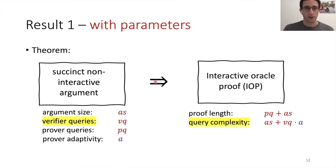So now going back to our results, if you start with a SNARG with argument size AS, VQ verifier queries, PQ prover queries, and adaptivity A, you end up with the following IOP. So the proof length is PQ plus AS. So AS is the argument size. So of course we're gonna have the argument here, but you cannot expect to have only this because the argument is succinct, and we do not expect the IOP to be succinct. So we have the prover queries here, which is some arbitrary polynomial in the witness length.